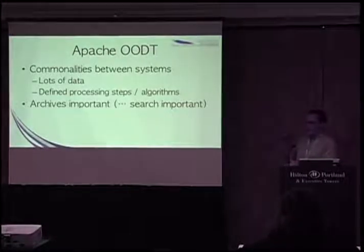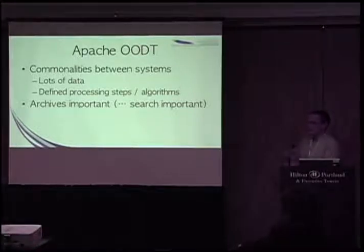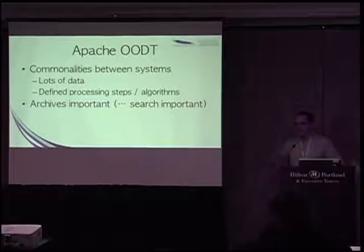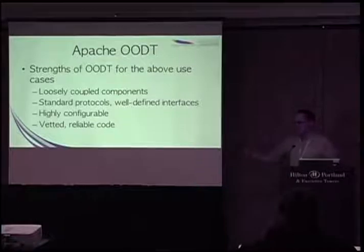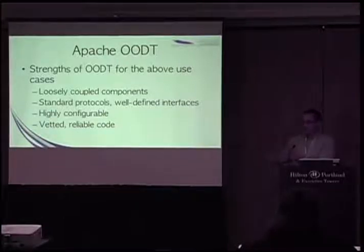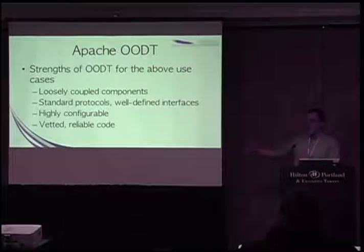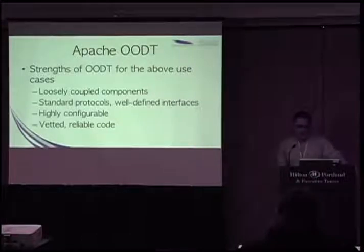These systems tend to be scientific in nature, true to OODT's roots. They share the fact that there's lots of data that needs to be processed, often a well-defined set of processing steps and algorithms, generating archives of data. The corollary is that search of these archives is ultimately important. OODT is a component framework, but you are in no way obligated to use all of it — it can be taken piecemeal. You can use just the file management component, or just the crawler and push-pull components, or string them together in any number of configurations to get a complete end-to-end data system.